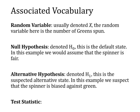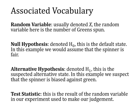Then we have something called the test statistic. The test statistic is the actual result of the random variable in our experiment. We decided we might spin the spinner 20 times, so the test statistic would just be how many greens we actually got.